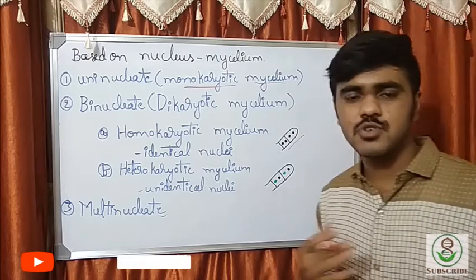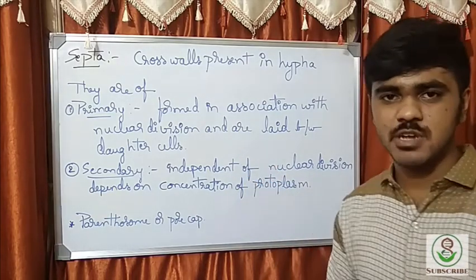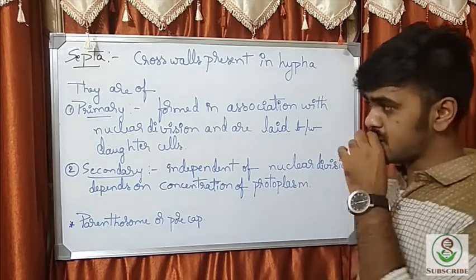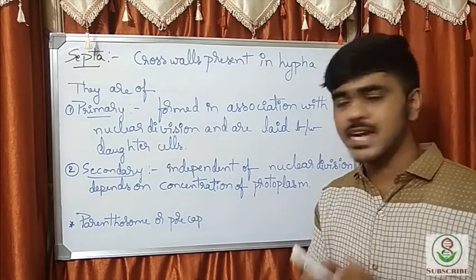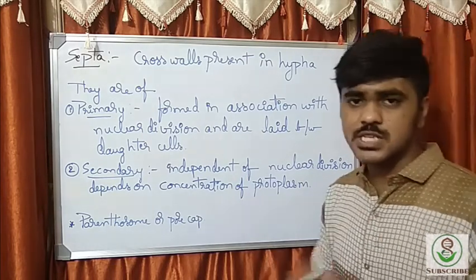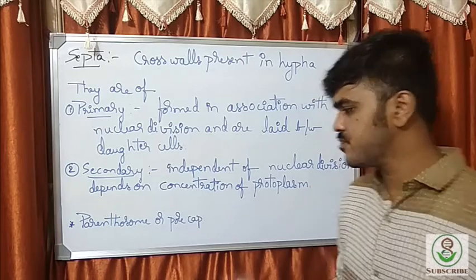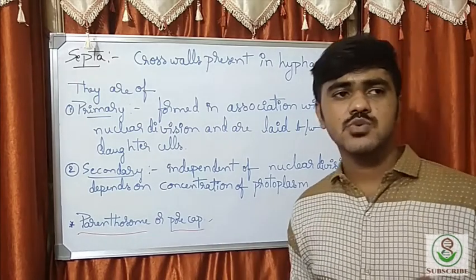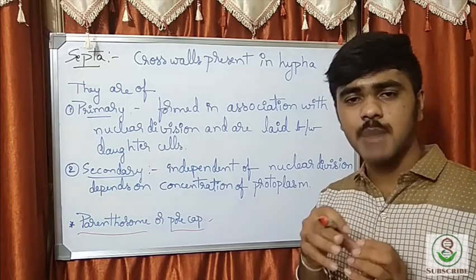In multinucleate mycelium, many nuclei are present. Now we shall see about septa. There are two types: primary and secondary. Primary septa are formed at the time of nuclear division, usually laid between daughter cells. Secondary septa are independent of nuclear division and form based on the concentration of the protoplasm. There is also a special structure — the parenthesome or pore cap — which is an extension of the endoplasmic reticulum, formed as a cap to the septa.